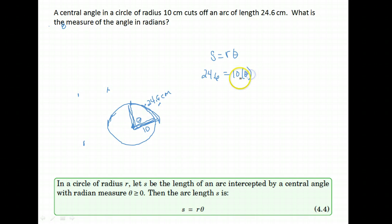We don't know theta. That's what we want to get. We just divide by 10. And when I do that, I get that theta is about 2.46 radians.